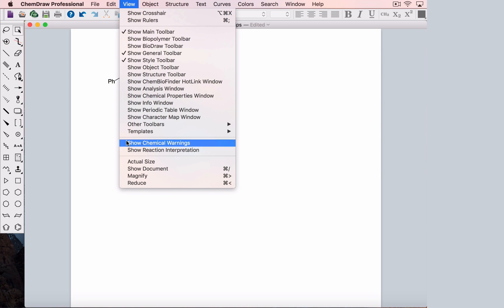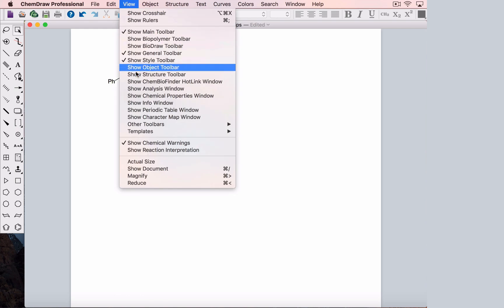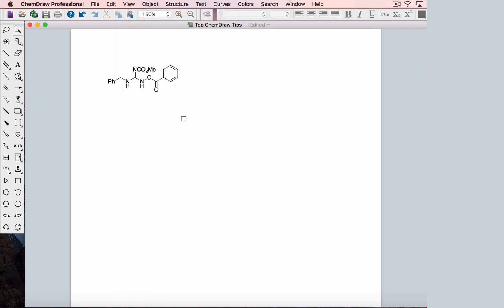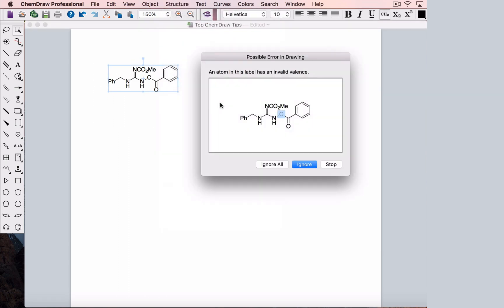You can check structures in a couple ways. You can activate chemical warnings from the view menu and any atom with incorrect valence or charge gets boxed in red. We can also use the structure menu to check our structure. This gives us a little more info about the nature of the error and here it tells us that carbon's valence is not correct.